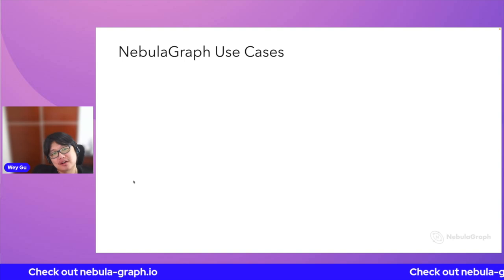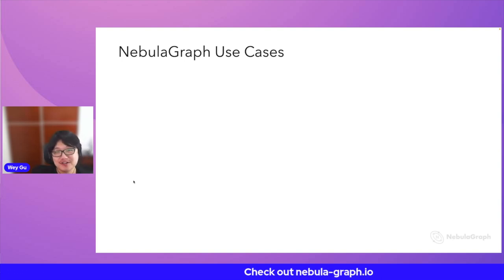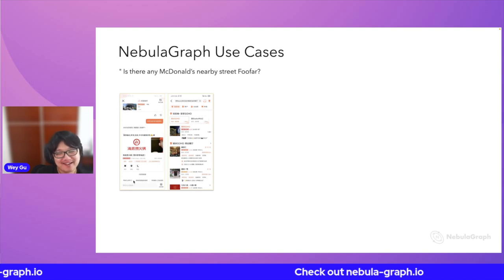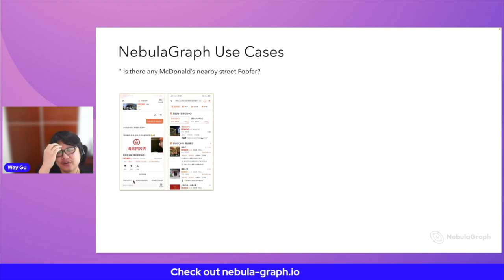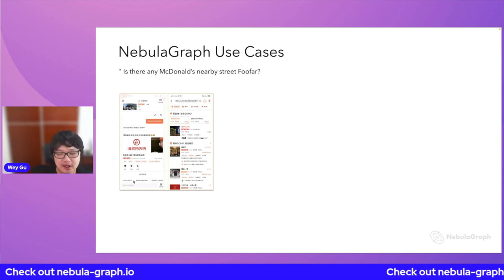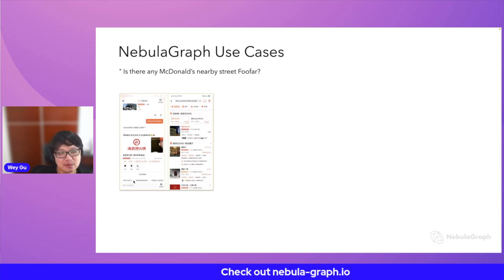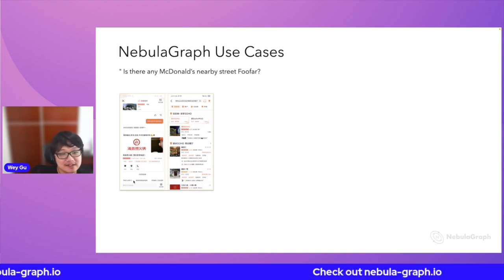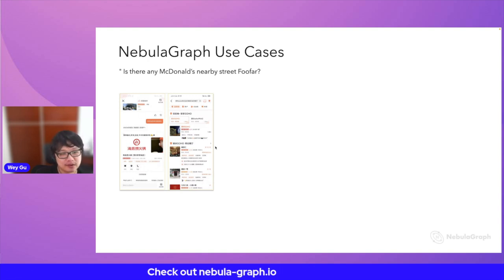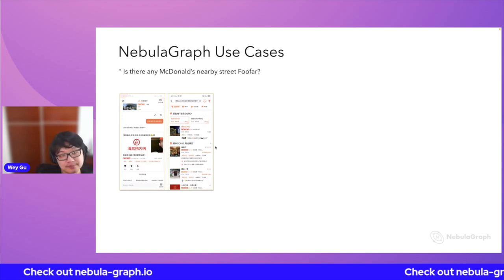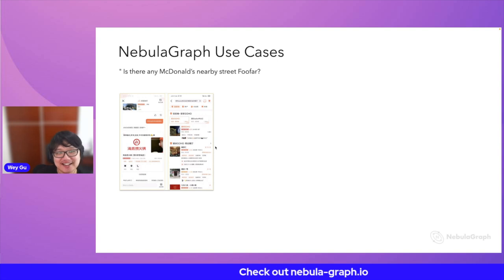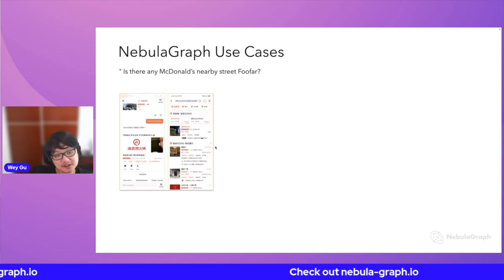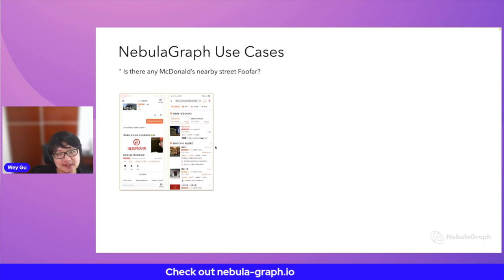Finally, I want to use most of the time to give you a sense of graph database use cases, which I consider quite interesting. One of the first things I want to show comes from one of our users, Meituan — which is the Chinese version of Yelp. They were putting Nebula Graph on their service in more than 50 different use cases. One interesting one is making a smart chat agent, just like ChatGPT but not that smart. With Nebula Graph and a knowledge graph in the backend, you can easily create such a thing.